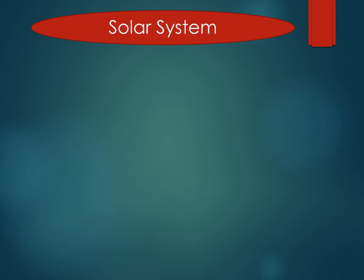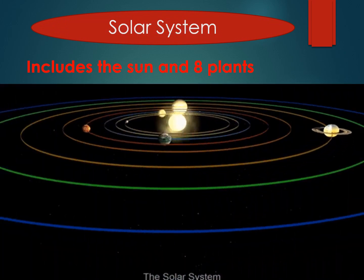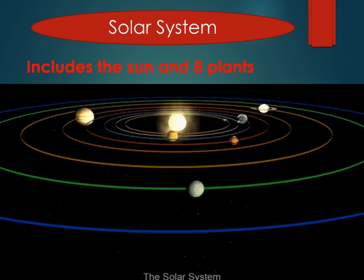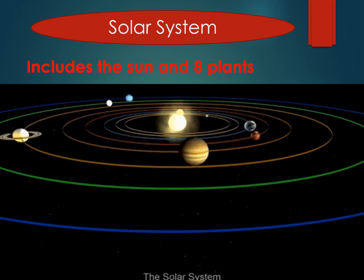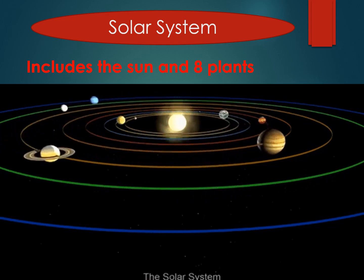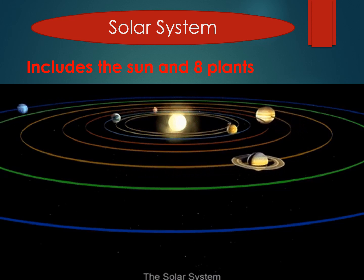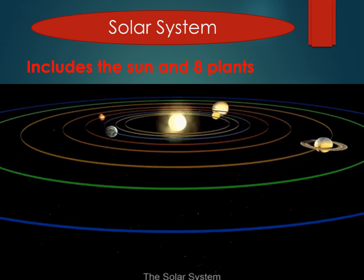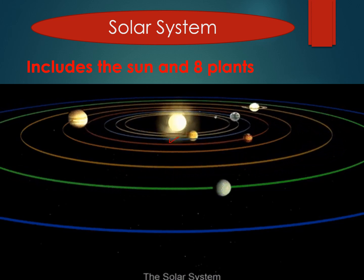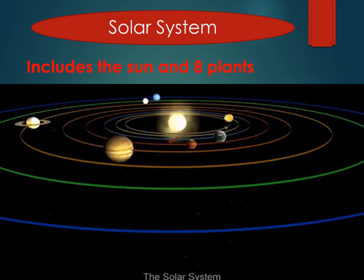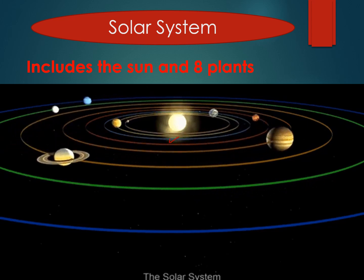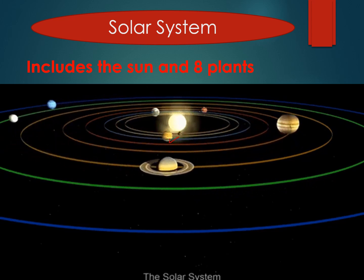Solar system. The solar system, as you can see in this picture, includes the sun and eight planets. We will know each one at the second slide.